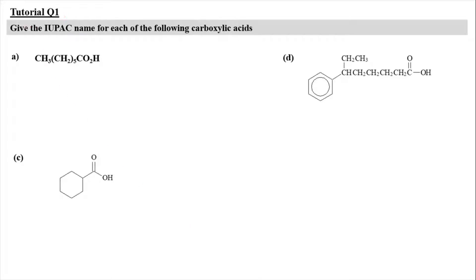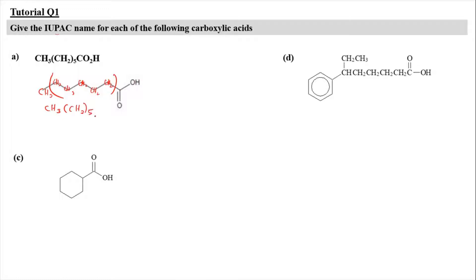For tutorial question 1, we have to give the IUPAC name for each of the following carboxylic acids. For A, we have CH3(CH2)5CO2H. If you expand this structure, what you're going to get is CH3, CH2, CH2, CH2, CH2, CH2, and then C double bond O, OH. So CH2 is repeated 5 times. That is why the condensed structure writes CH2 bracket 5, and CO2H basically means COOH. Just ensure that you know how to expand that.